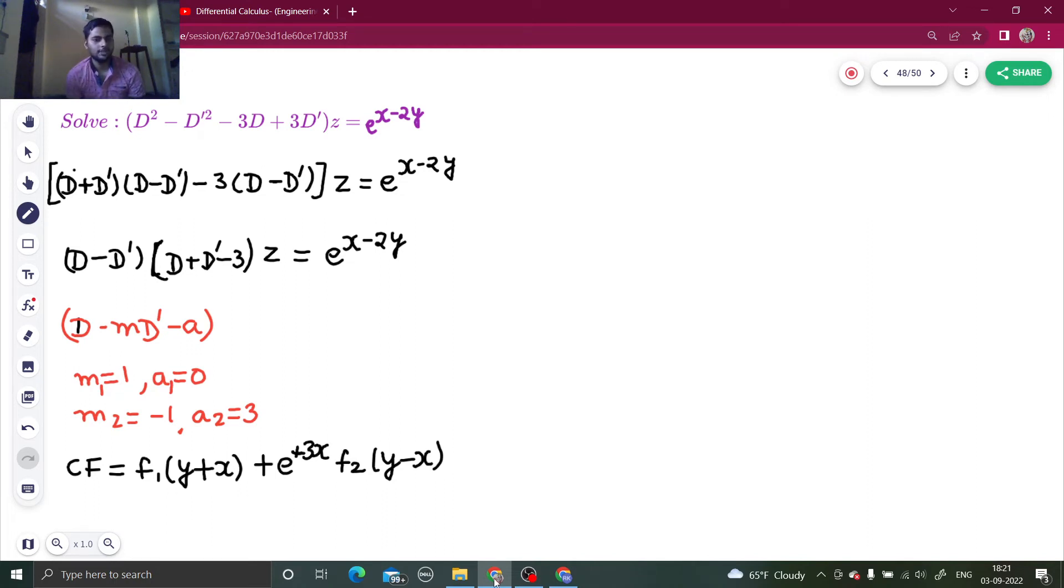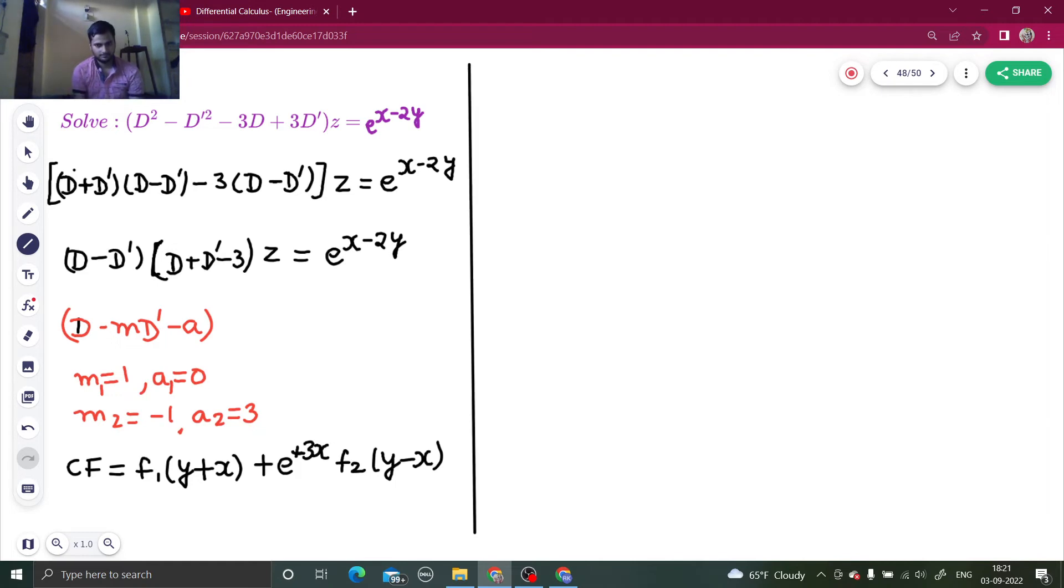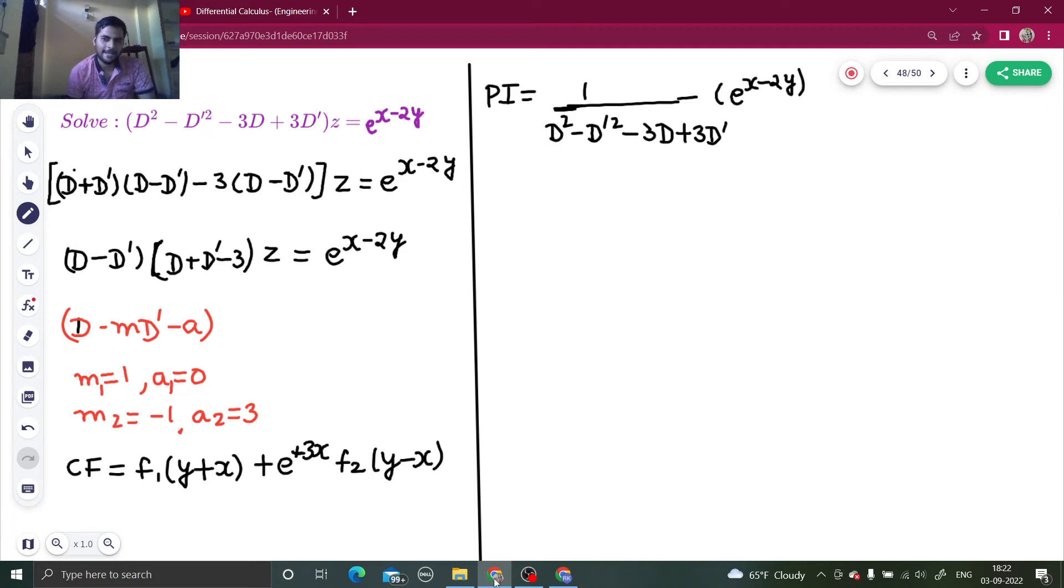Now, coming to the particular integral. My particular integral is 1 upon d square minus d square minus d dash square minus 3d plus 3d dash and this will operate on e power ax minus vy. Here e power ax minus vy format is there, so a is 1, v is minus 2.